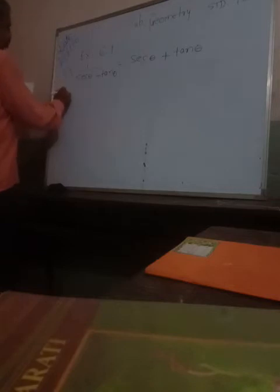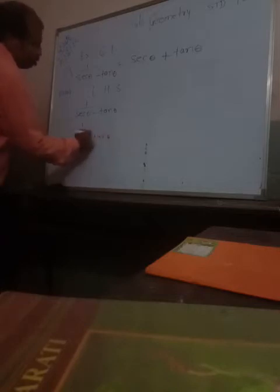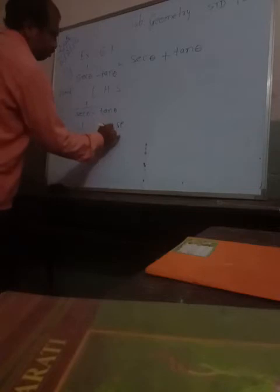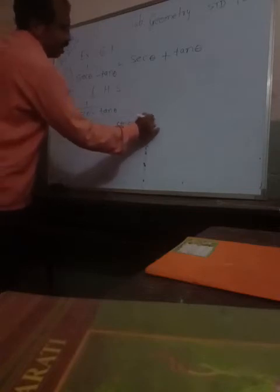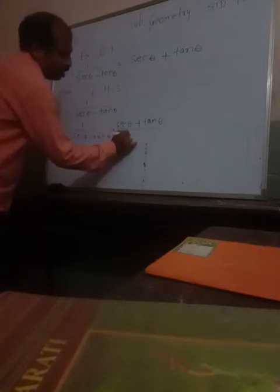Now what is the LHS? See here all of you. LHS is 1 upon sec theta minus tan theta. Now what we have to do? We have to rationalize this. How to rationalize? In the denominator we have sec theta minus tan theta, so we multiply numerator and denominator by sec theta plus tan theta.